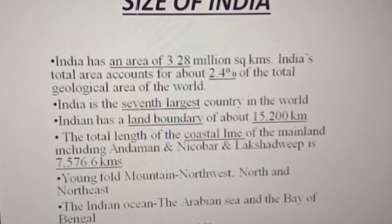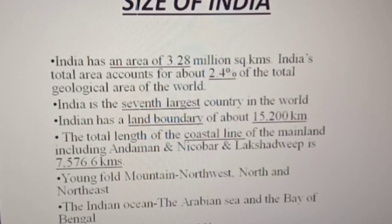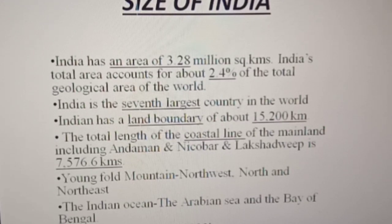India is bounded by young fold mountains in the north-west, north, and north-east. The south of India extends towards the Indian Ocean, dividing it into two seas — the Arabian Sea on the west and the Bay of Bengal on the east. The east-west extent of India is 2,933 km and the north-south extent is 3,214 km, but the east-west extent appears to be smaller than the north-south extent.